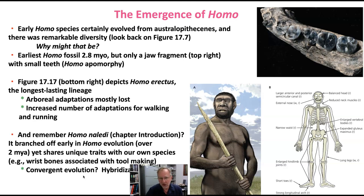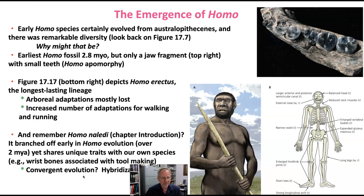In Homo erectus, the arboreal adaptations that early hominins had and retained from our ape ancestors are mostly lost. The preponderance of adaptations that we see in Homo erectus, shared with us, are adaptations for walking and running. In the figure, anatomical parts notated with lowercase 'W' are suggesting adaptations for walking.